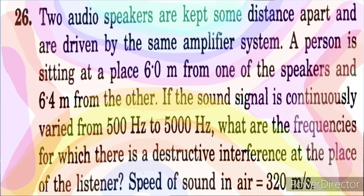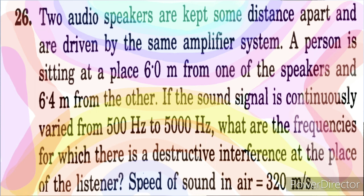Varma Sound Waves, numerical 26. Two audio speakers are kept some distance apart and are driven by the same amplifier system. A person is sitting at a place 6 meters from one speaker and 6.4 meters from the other. If the sound signal is continuously varied from 500 Hz to 5000 Hz, what are the frequencies for which there is destructive interference at the place of the listener? The speed of sound in air is 320 meters per second.